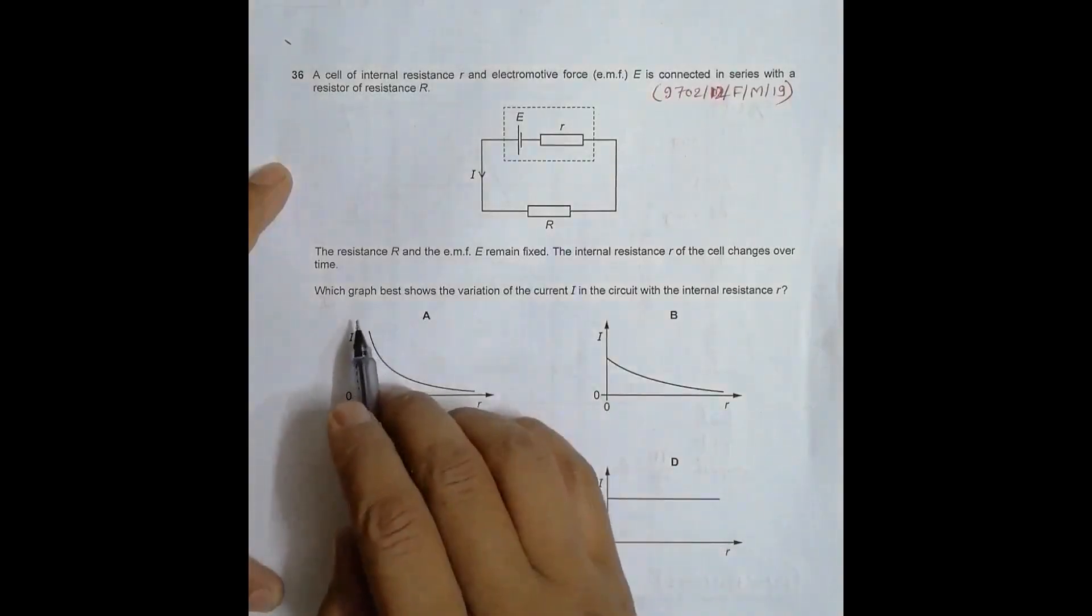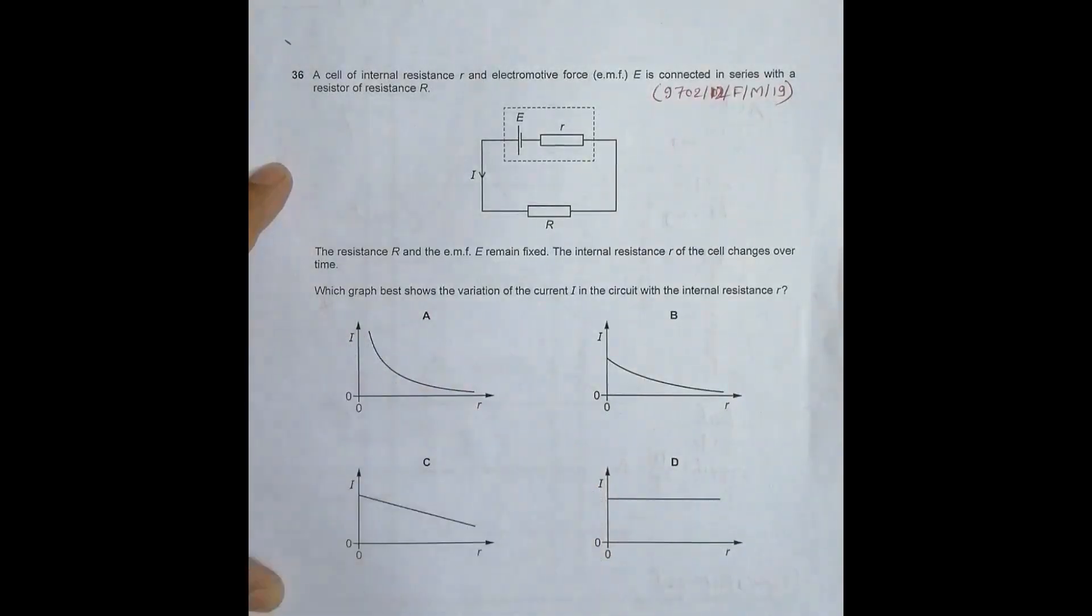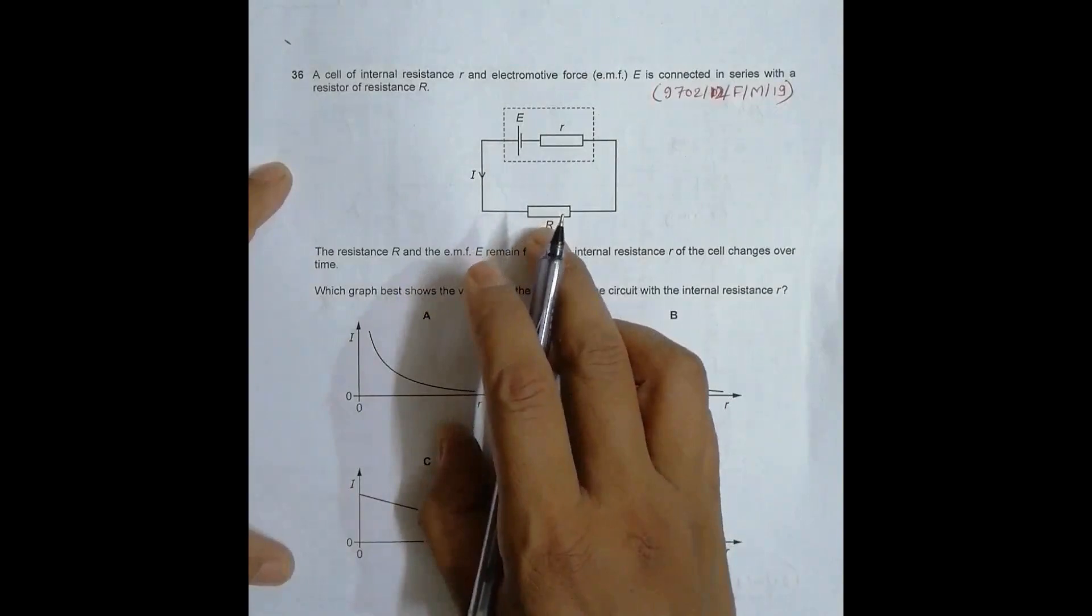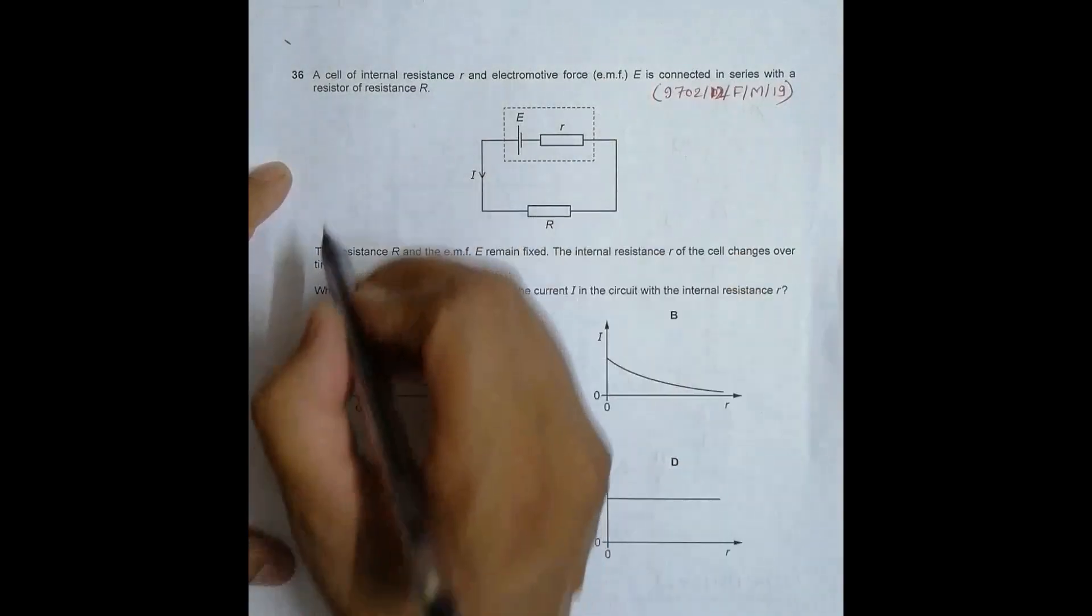Which graph shows the variation of the current I in the circuit with the internal resistance r? So we have to find I with r. Now the relation which relates all these things is E equals...